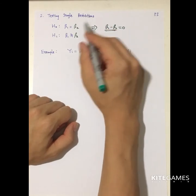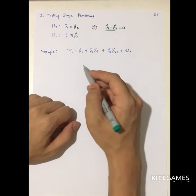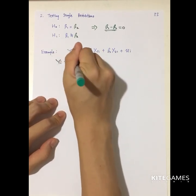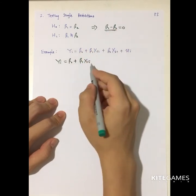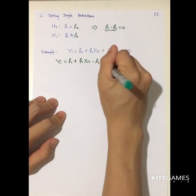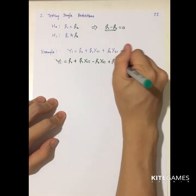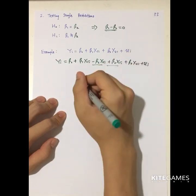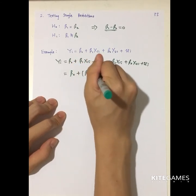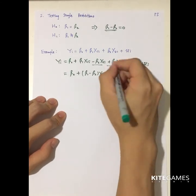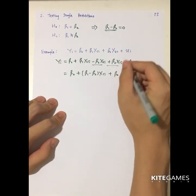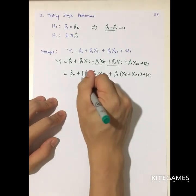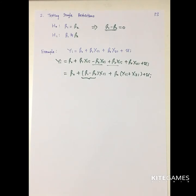We usually test whether something equals zero, so we put beta2 to the left-hand side and set beta1 minus beta2 equal to zero as our null hypothesis. You need to turn beta1 into beta1 minus beta2. To do this, we subtract beta2·X1i artificially and then add beta2·X1i again, keeping the equation unchanged. Then beta1 minus beta2 can be factored out, and the remaining X2i term equals beta2 times (X1i plus X2i) plus Ui. After that, you just test whether this is statistically significant using the t-test.